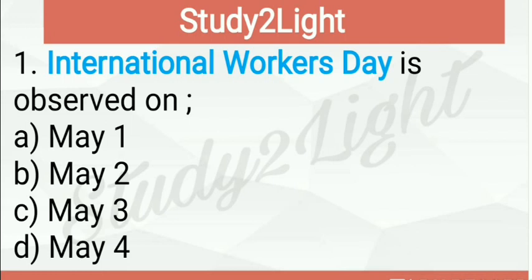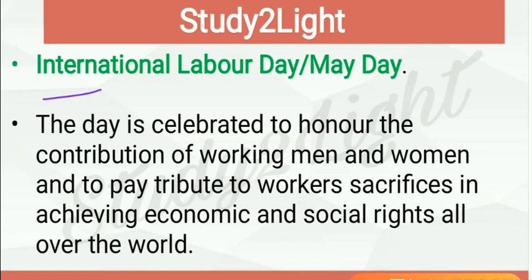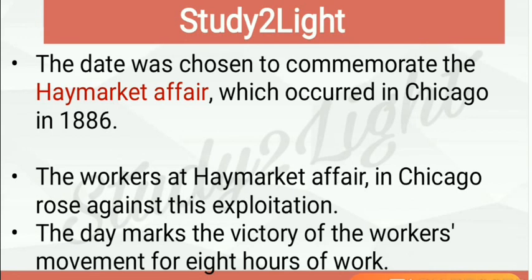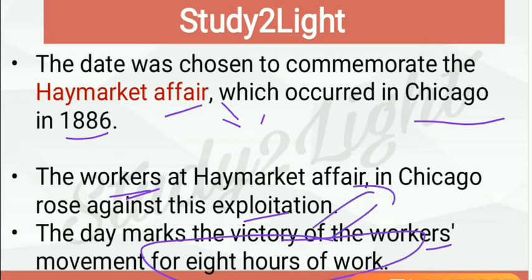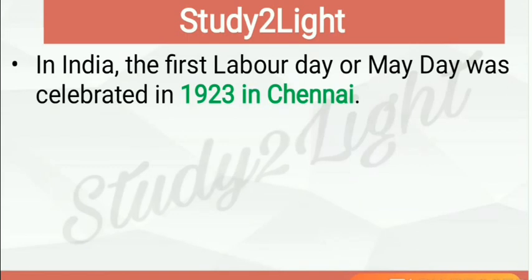Mashaba Khatun and Sri Harani. Now let's begin the first question: International Workers Day is observed on — it is observed on 1st of May, so A is the right answer. It is also called International Labor Day and May Day. This day is celebrated to honor the contribution of working men and women and to pay tribute to workers who sacrificed in achieving economic and social rights.